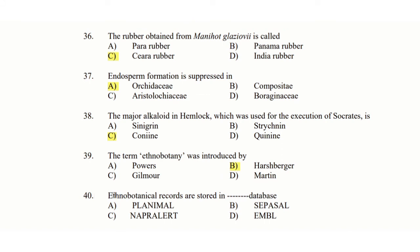40th question: Ethnobotanical records are stored in which database? Option A: Planimal, option B: Surpassal, option C: NAPRALERT, option D: EMBN. The answer is option C: NAPRALERT.